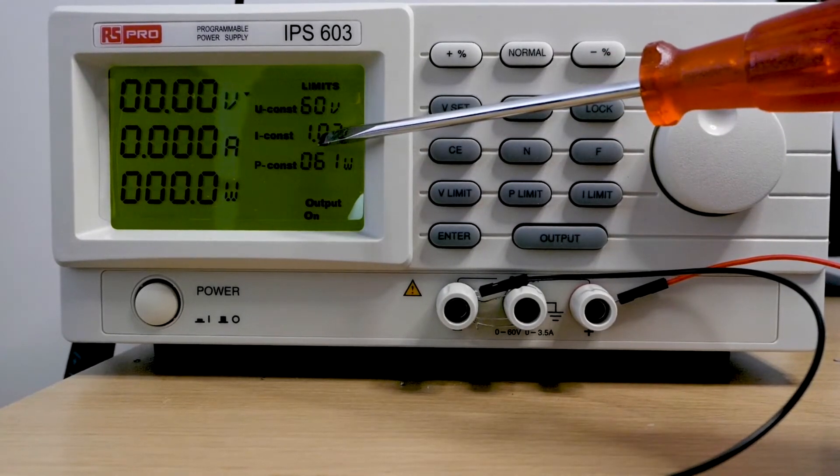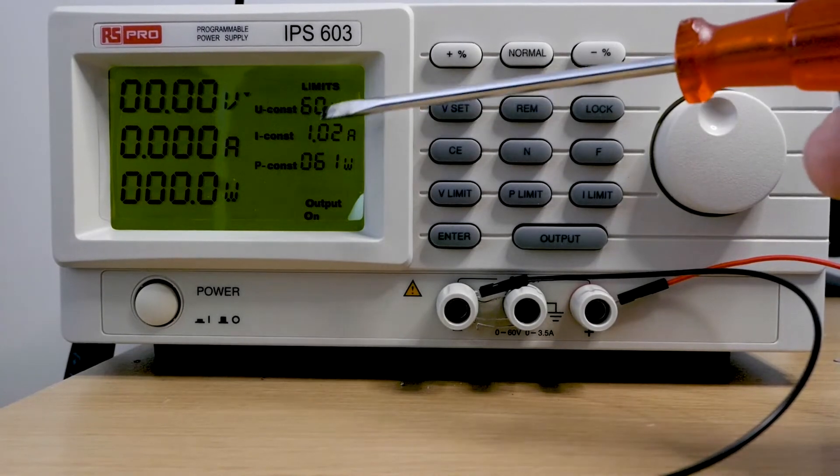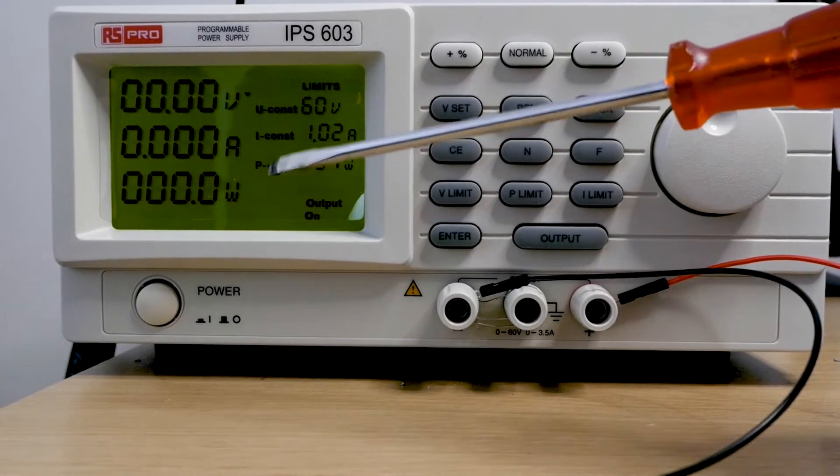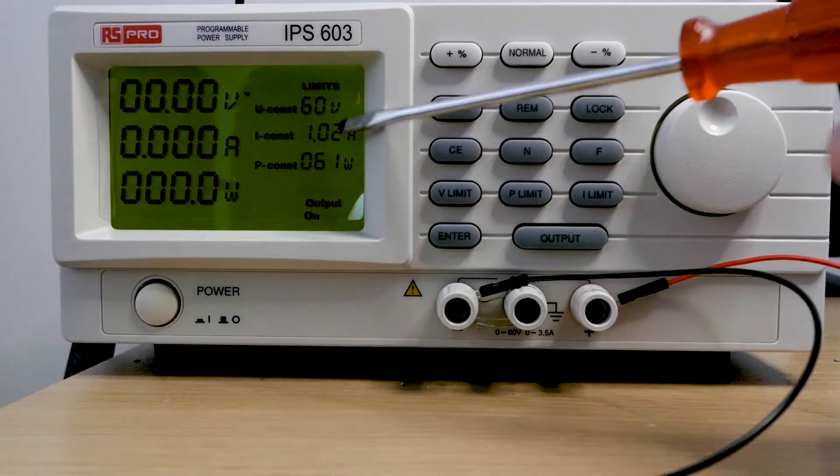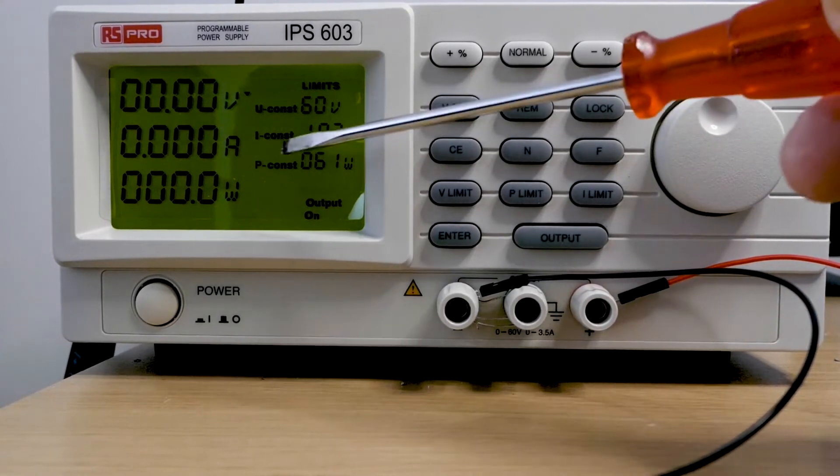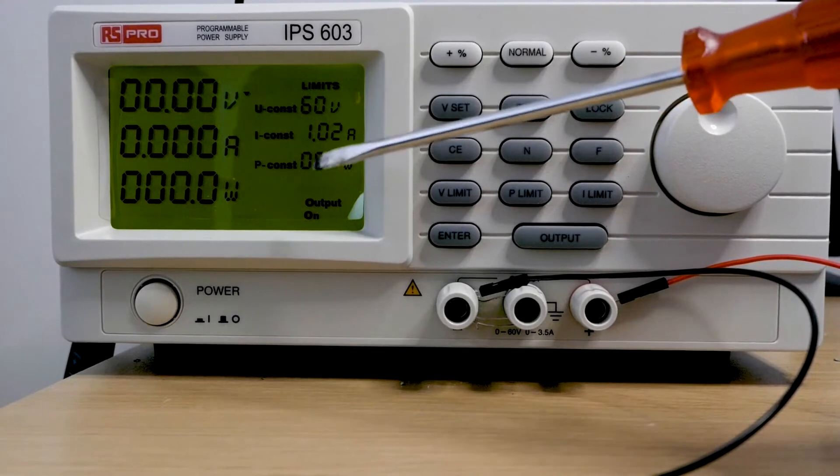If we set the voltage to 60 volts and then got a 60 ohm resistor and connected it to the output here, we'd dissipate 60 watts and that would be fine, we'd be below our limit.